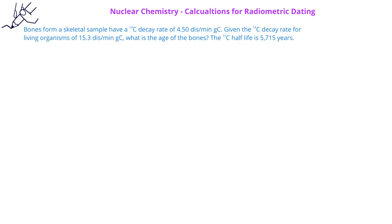Given that the carbon-14 decay rate for living organisms is 15.3 disintegrations per minute per gram of carbon, what is the age of the bones? We're reminded that the carbon-14 half-life is 5,715 years.